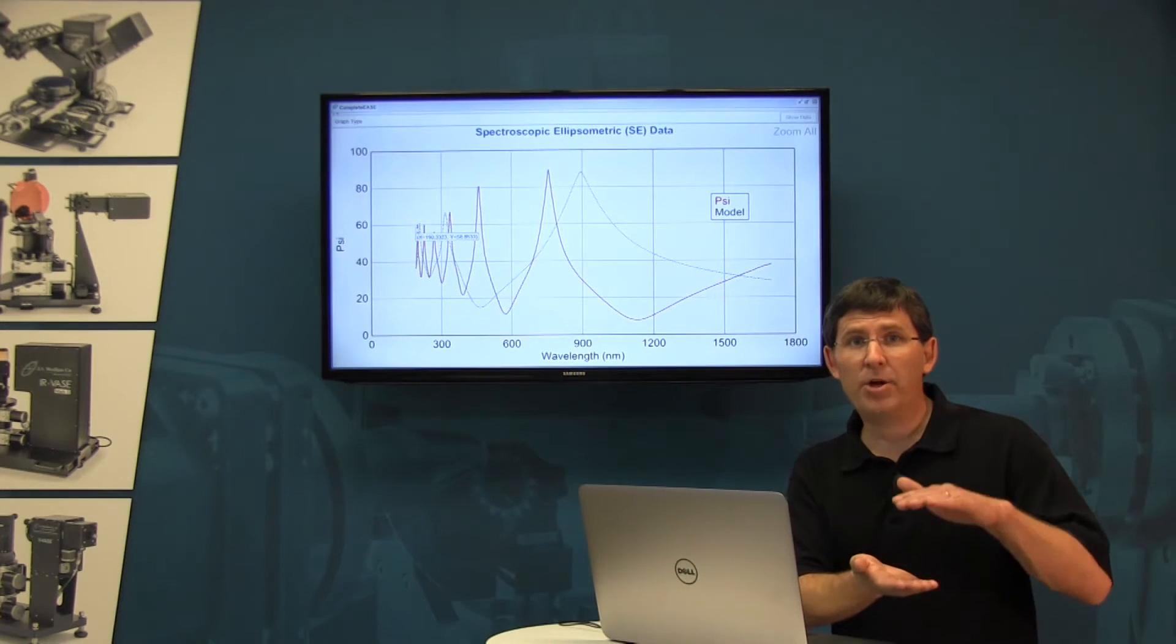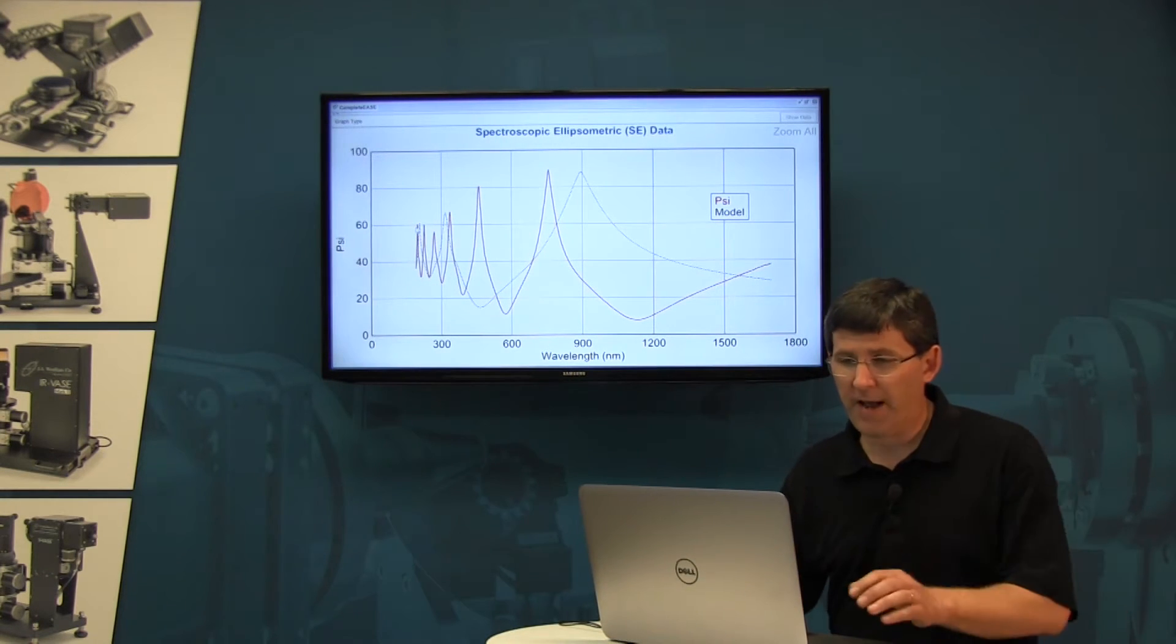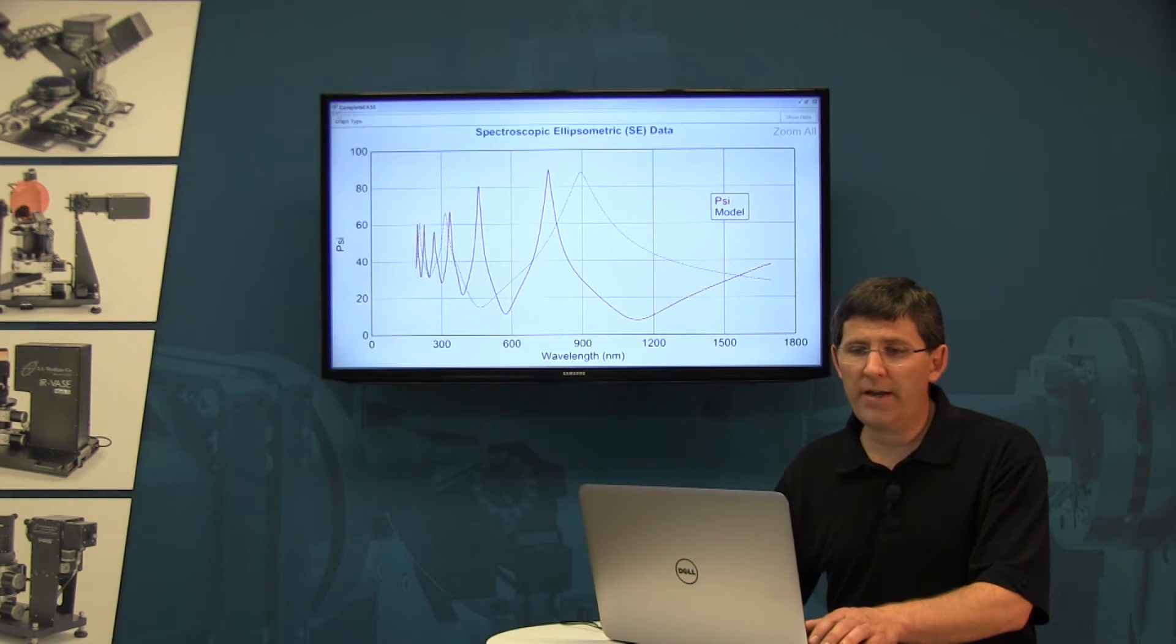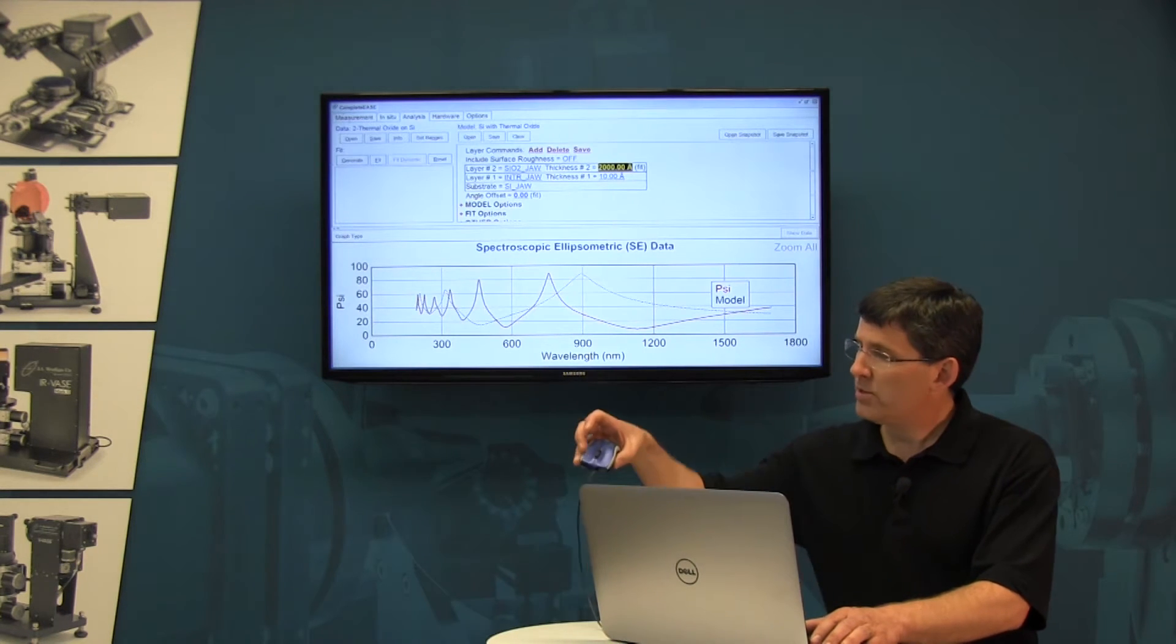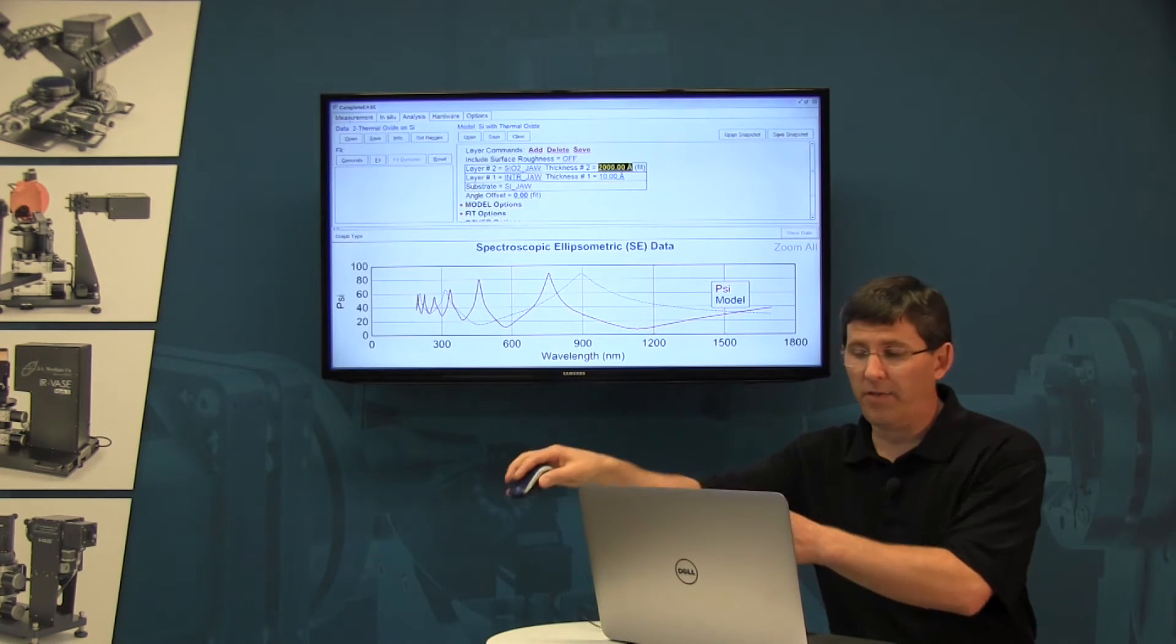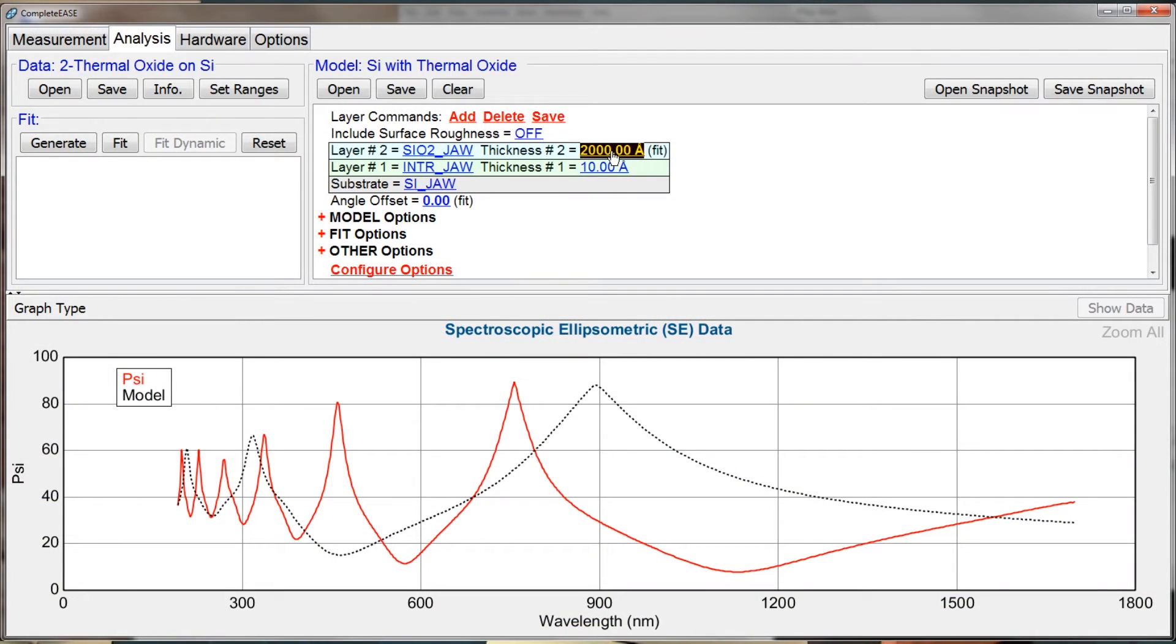Again, I need to go thicker to get more peaks and valleys. And that's where we're going to get to the mouse roller wheel. So you take your mouse with the roller wheel in the center and position it directly over top of the thickness. By holding the shift key down, now I can roll my mouse and it will increase the thickness of that fit parameter.